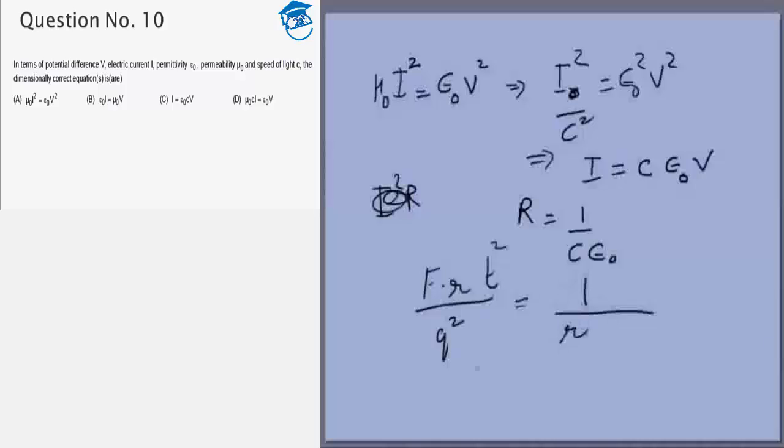And ε₀ we can get from the standard equation F is equal to 1 by 4π ε₀ q² by r², which gives me ε₀ is equal to - c ε₀ is equal to q² by r² by f, right.